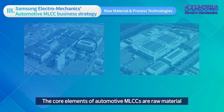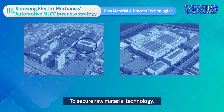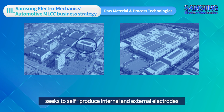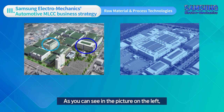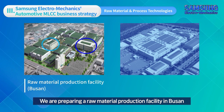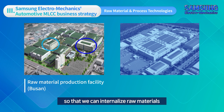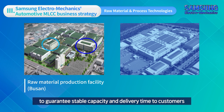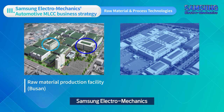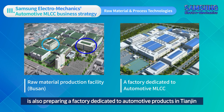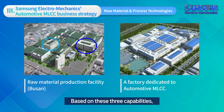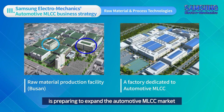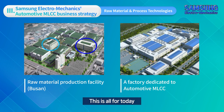The core elements of automotive MLCCs are raw material and process technologies. Samsung Electromechanics seeks to self-produce internal and external electrodes of the dielectric material, as well as all auxiliary materials. A raw material production facility is being prepared in Busan to internalize raw materials — only a few MLCC companies can produce raw materials. The Busan factory is dedicated to automotive MLCCs to guarantee stable capacity and delivery. Samsung Electromechanics is also preparing a factory dedicated to automotive products in Tianjin, combining raw material technology, equipment technology, and stable supply capacity to expand the automotive MLCC market.